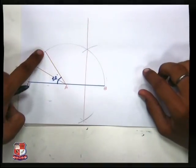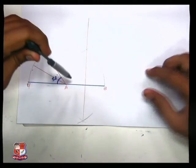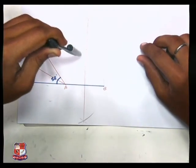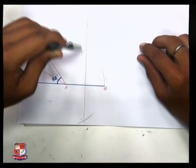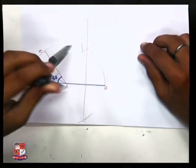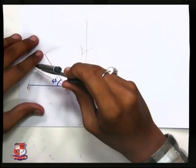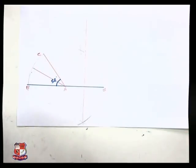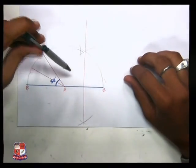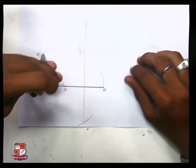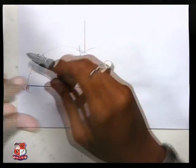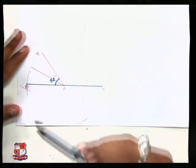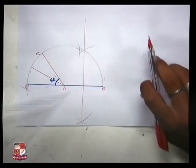Now take the bisector of AC. Take C as center, AC as radius. On another side, we have got bisector of AB, the bisector of both lines.